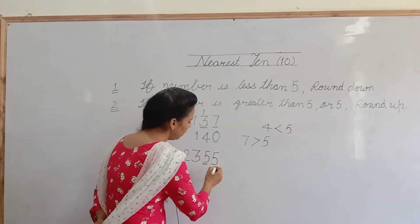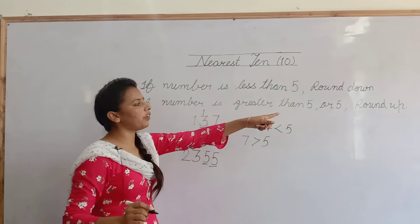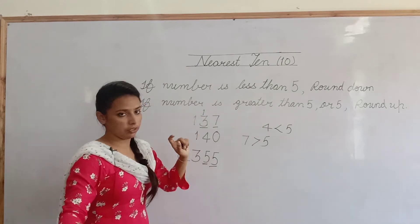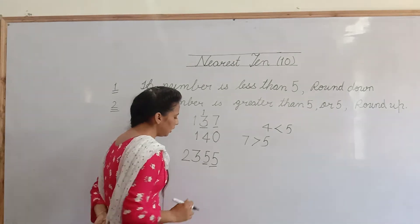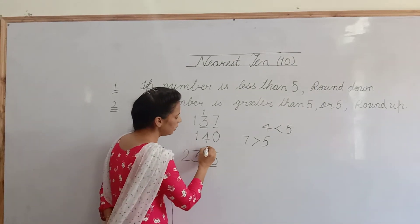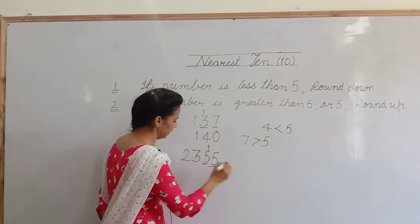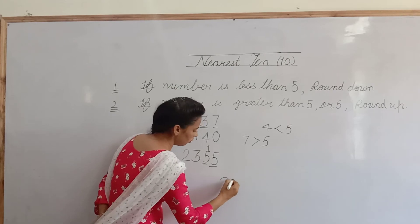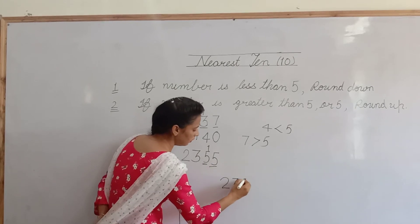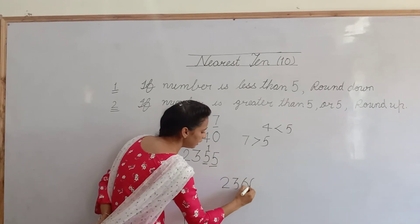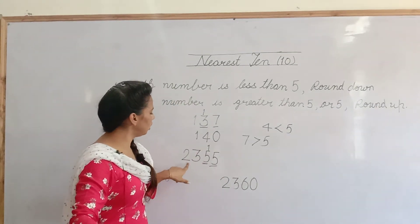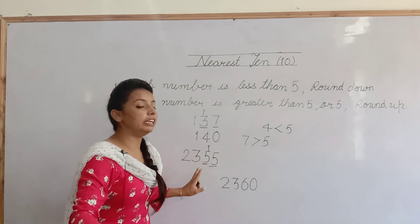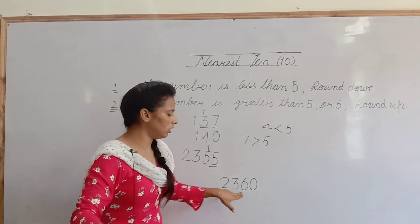and in same way we know if number is 5 और greater than 5. 5 है यह 5 से बड़ा है. तो हमें क्या करना है? same 10's place में हमें 1 add करना है. 2,360. now 2,355 का nearest 10 क्या आएगा? 2,360.